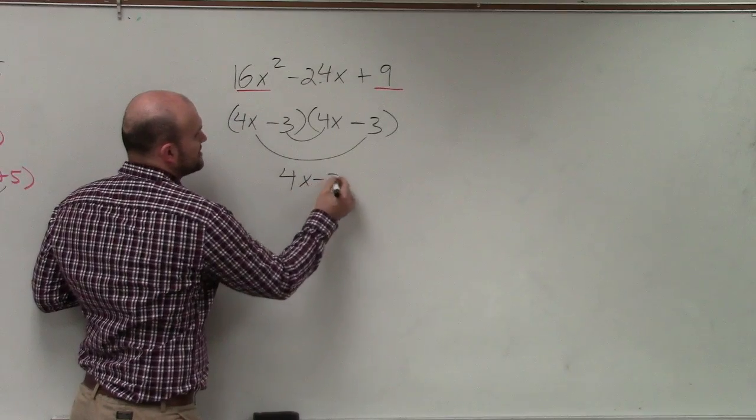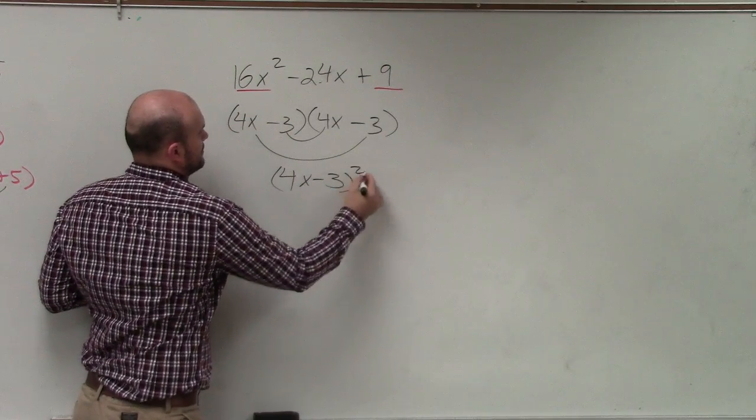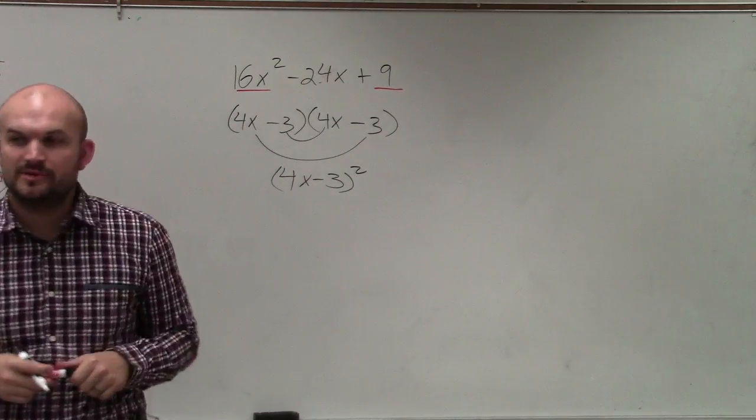So therefore, I can write this as 4x minus 3 squared. And that would be your factored form.